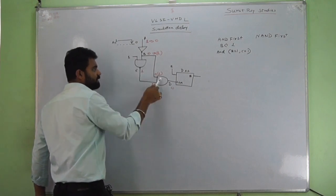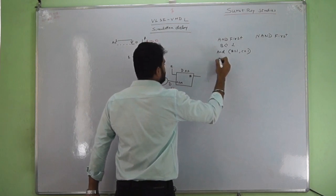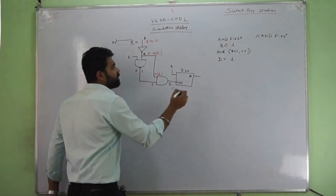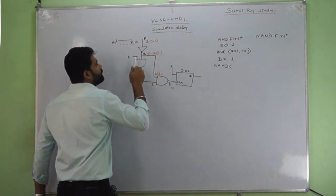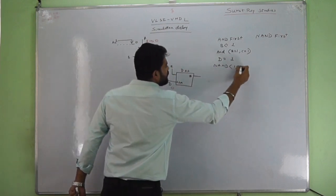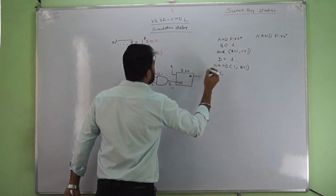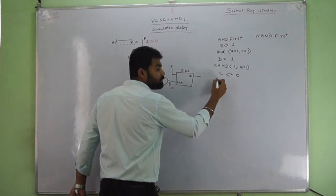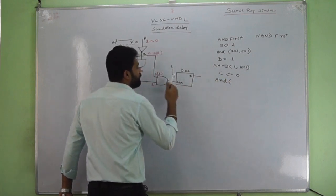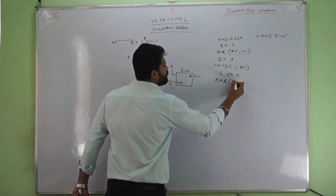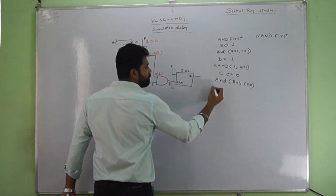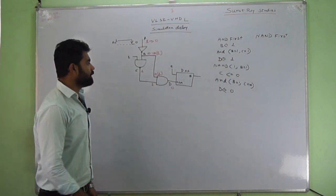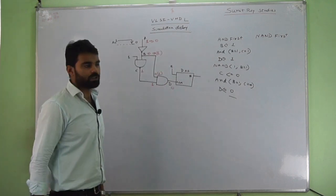Since NAND has not changed yet, D is calculated as 1 AND 1 which equals 1. Now NAND works with one input as 1 and B equal to 1, giving output C as 1 AND 1 inverted, which is 0. As the output has changed, AND works again with B equal to 1 and C equal to 0, giving D equal to 0. Both gates have now worked, so D stays at 0.